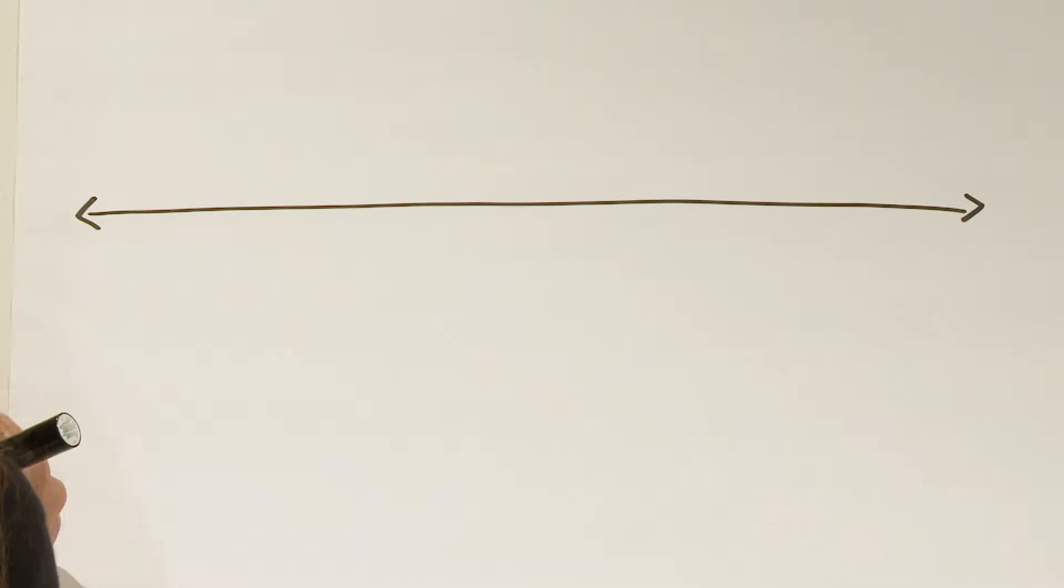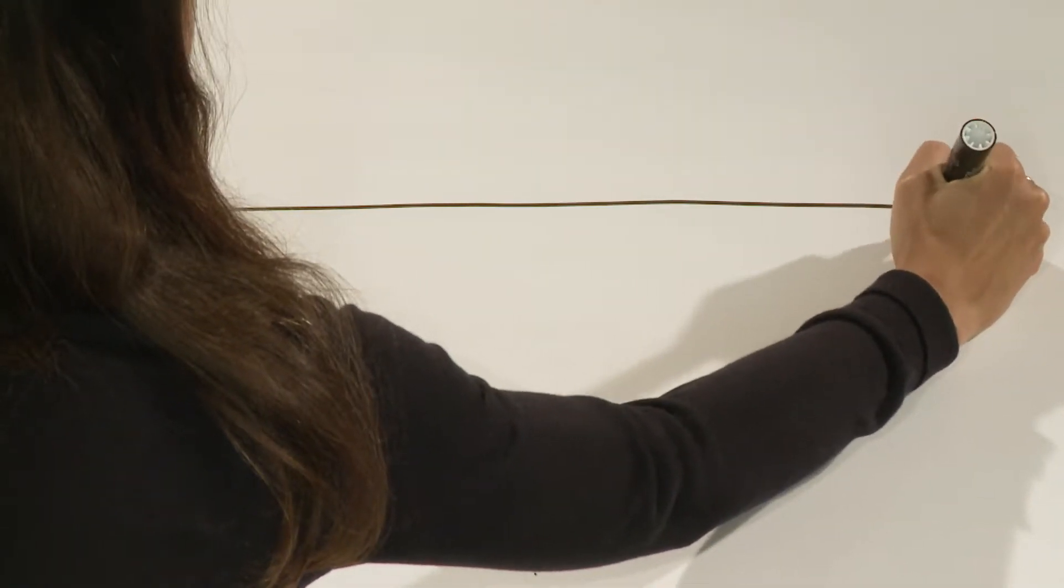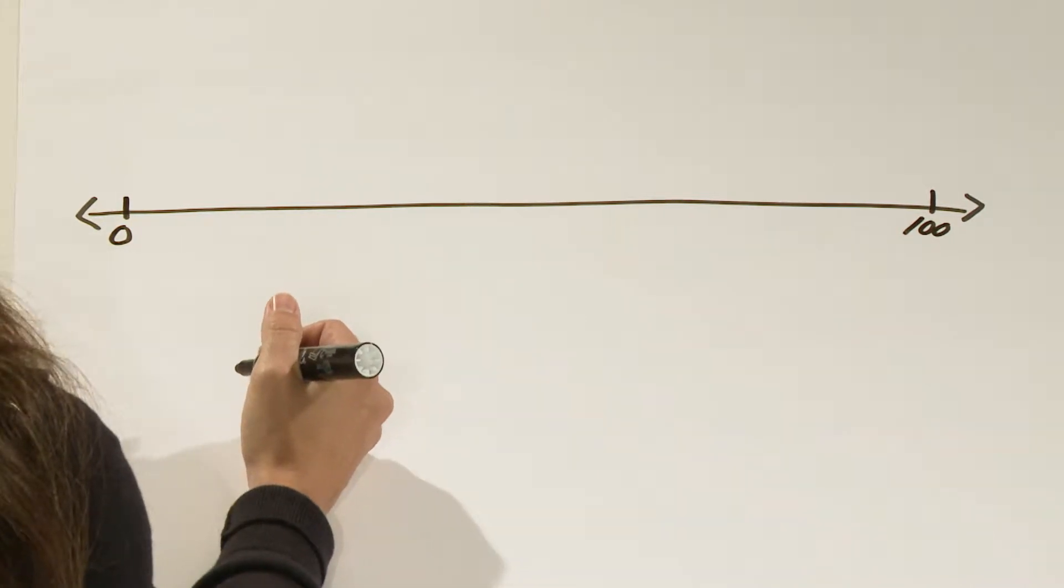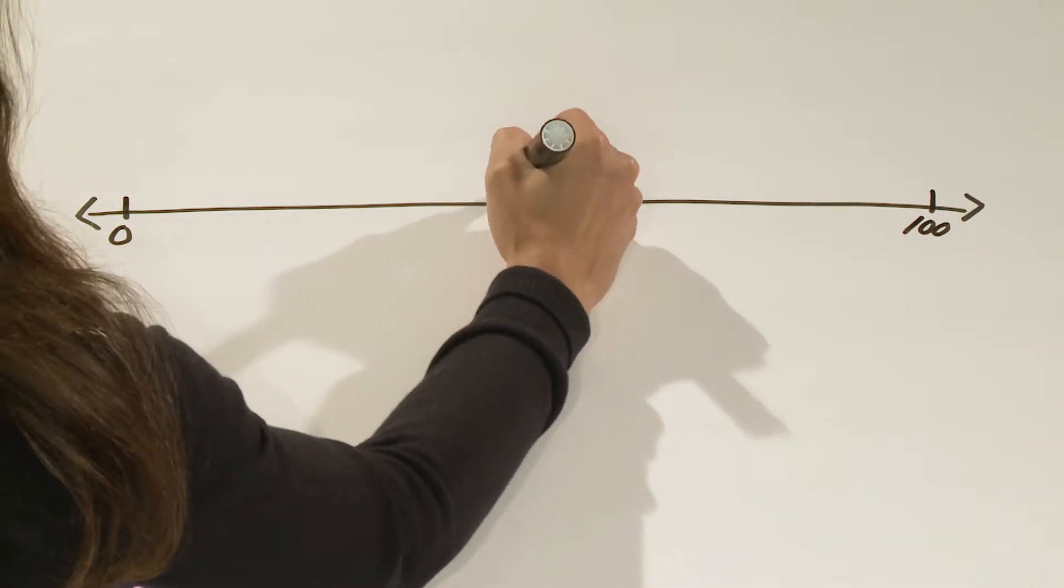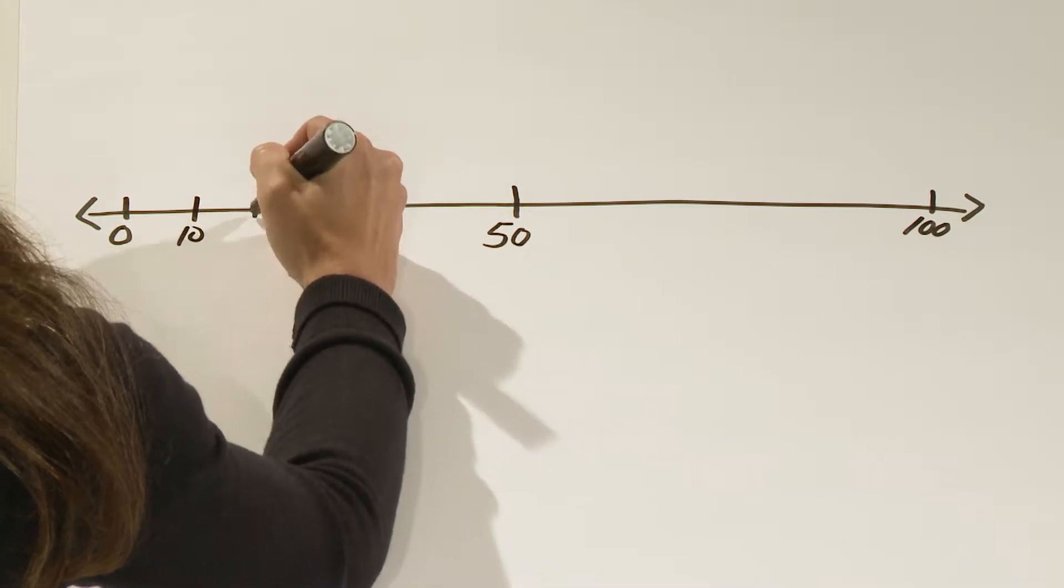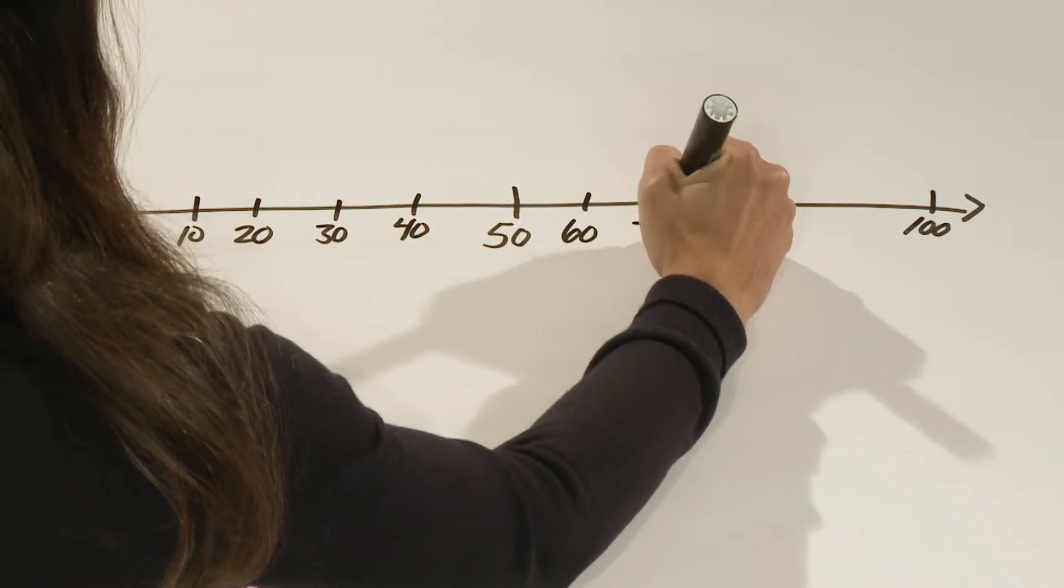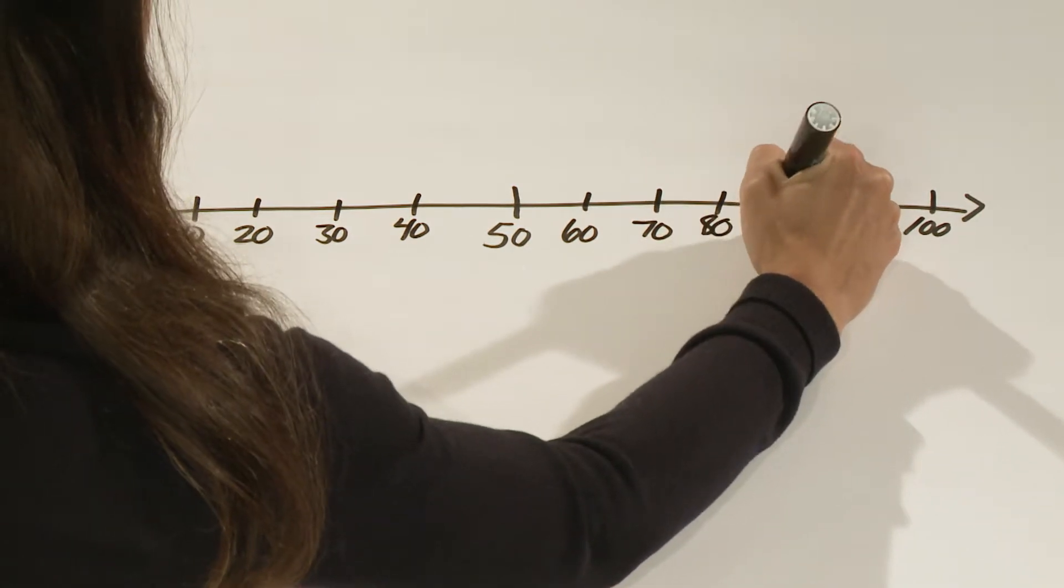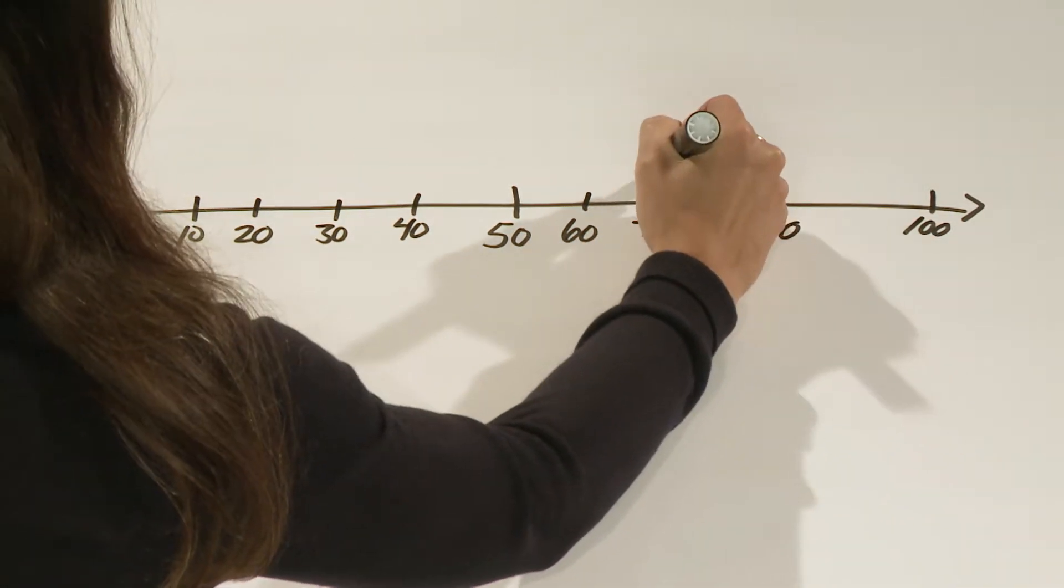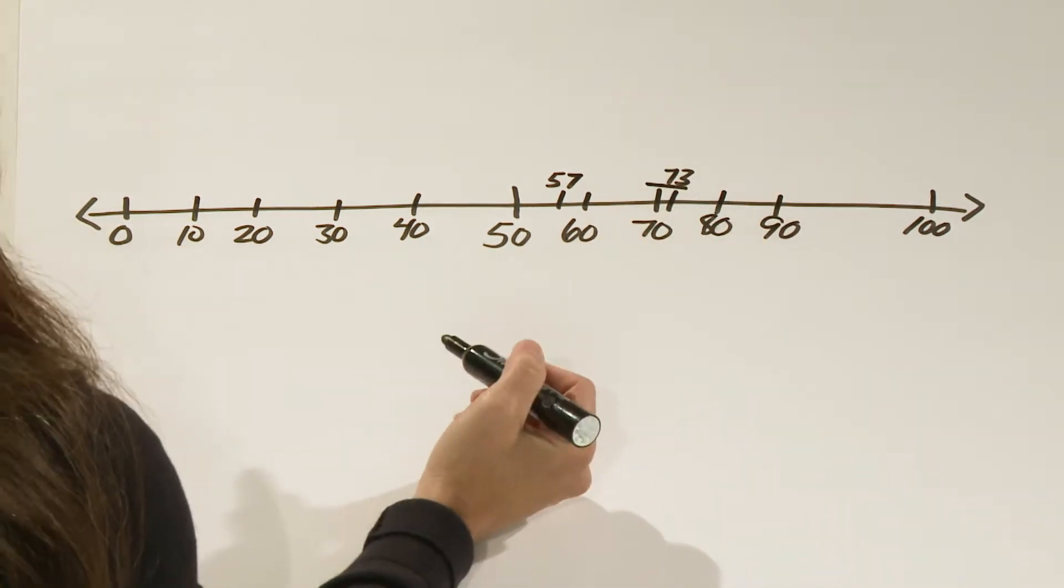One tool that can be used in several grades is the number line. In primary grades, we use the number line to compare whole numbers. For example, a student might want to know which number is larger, 73 or 57. They might use a number line to help them solve this. By knowing the relative position of where numbers are on a number line, they could reason where 73 and 57 belong, and see that 73 is the larger number.